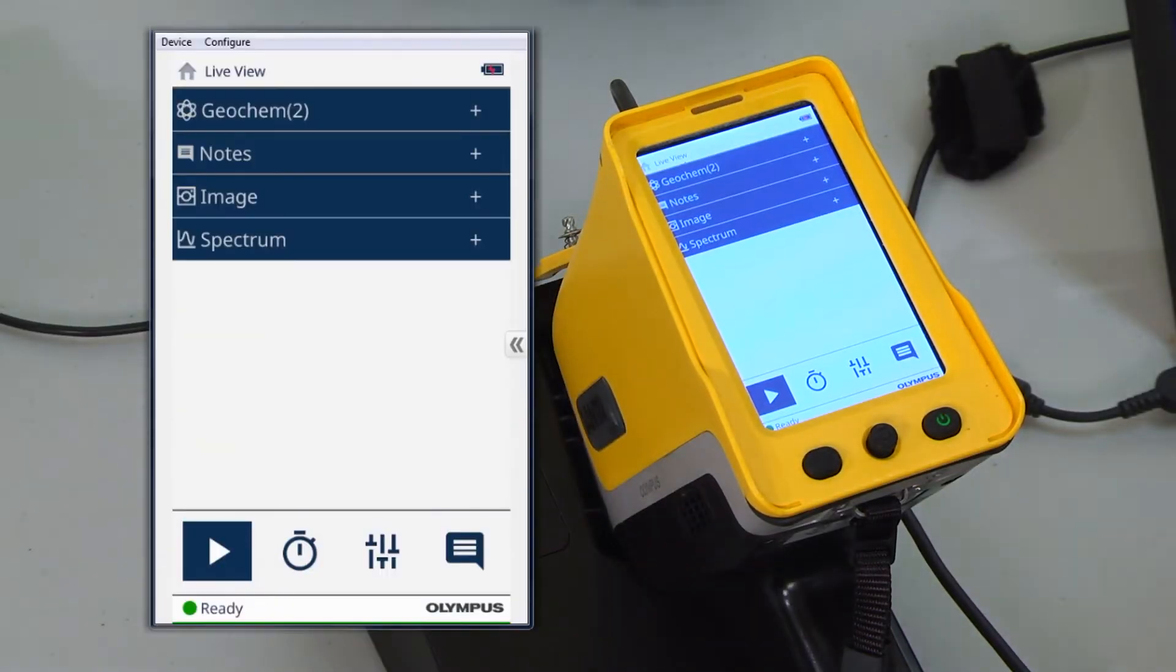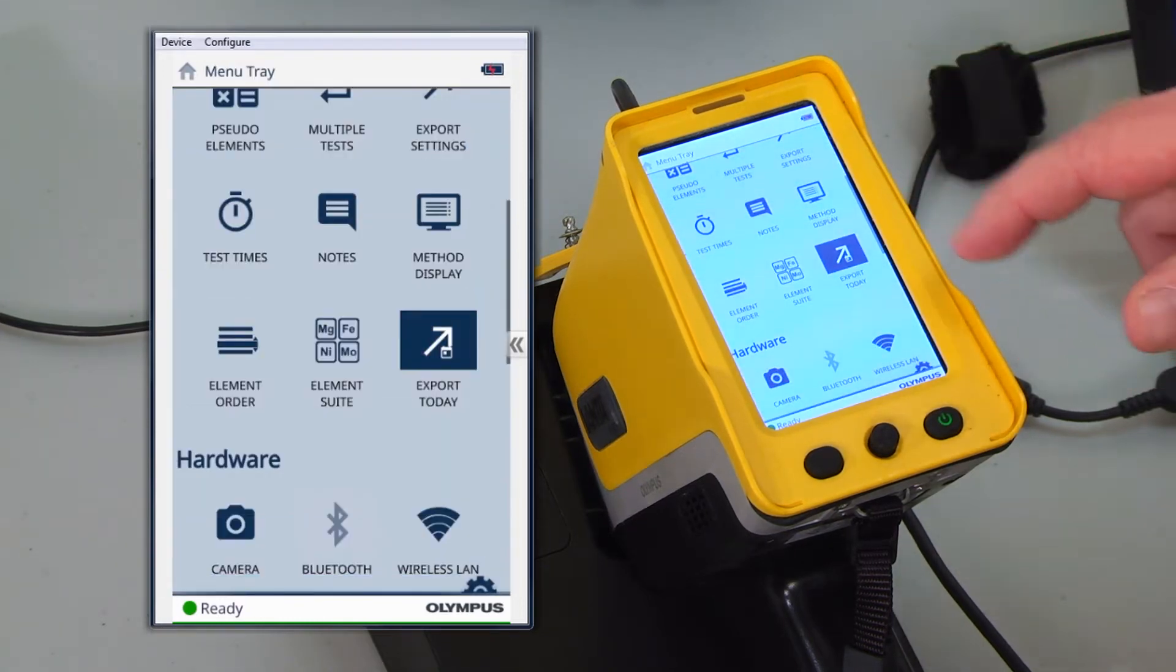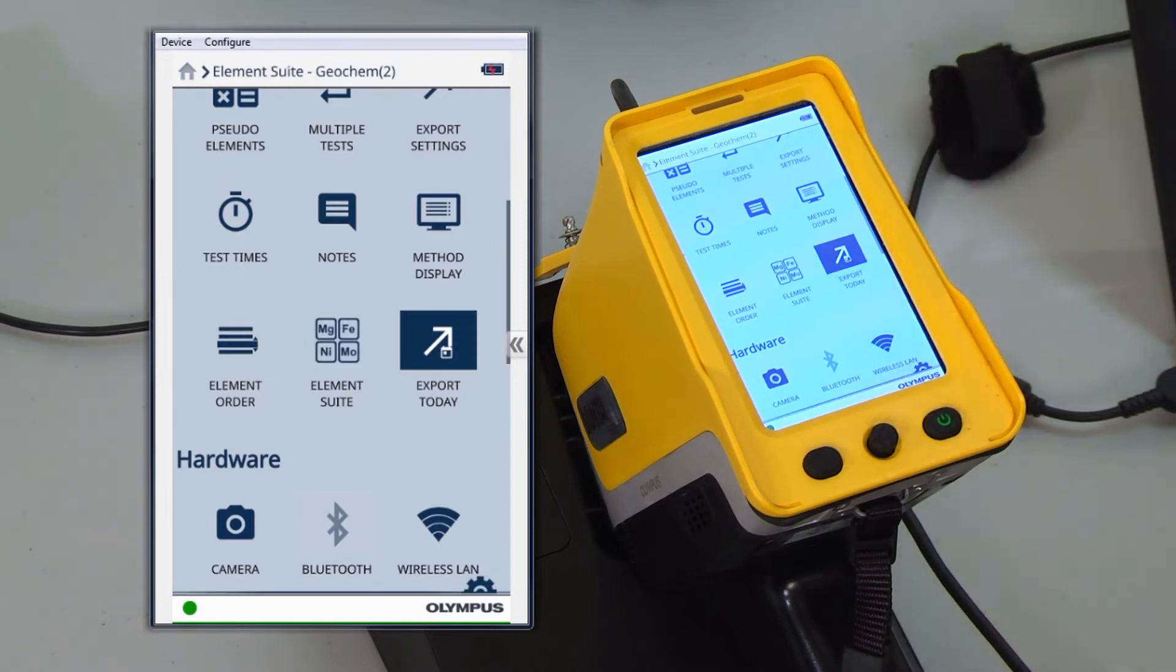OK. To see which elements are measured by which beam, from the main screen, we can swipe down from the right and tap on Element Sweep.